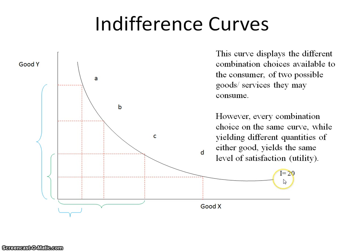In this particular case, this indifference curve yields a value or satisfaction of 20, so every combination choice along this same indifference curve will yield for the consumer a value of 20.